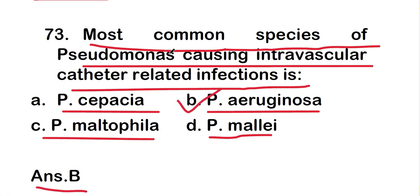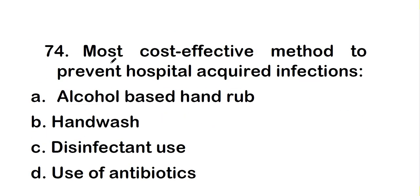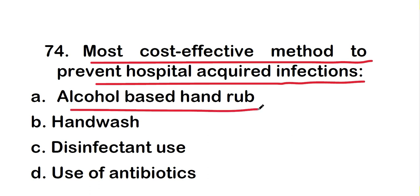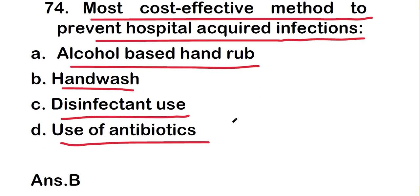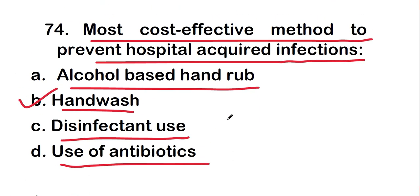The most common species of Pseudomonas causing intravascular catheter-related infection is Pseudomonas aeruginosa. The next question: the most cost-effective method to prevent hospital-acquired infections is alcohol-based hand rub, hand wash, disinfectant use, or use of antibiotics? The right answer is option B, hand wash.